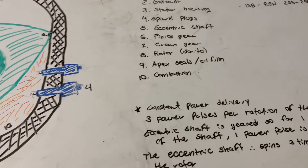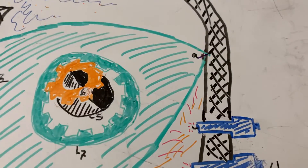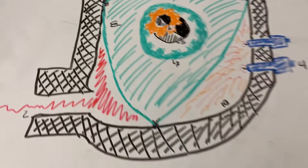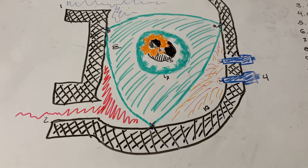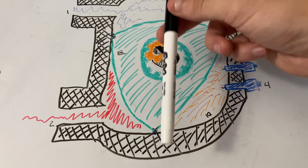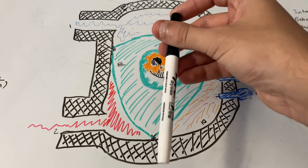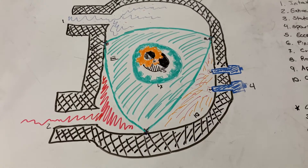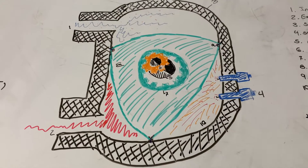Number eight is the rotor — the dorito. Number nine, those bits in purple, are the apex seals. Those work analogously to your compression and oil rings on your pistons, and they kind of move like this on the rotor to fill up those gaps as the rotor rotates.